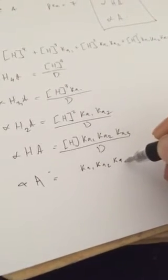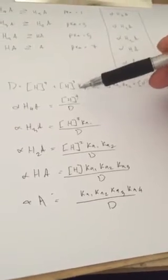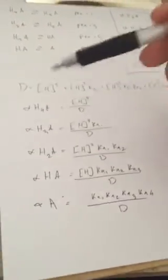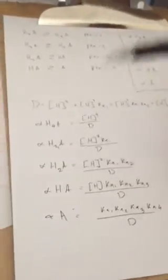And so that makes sense because in the first equation, you haven't lost, you want to find the amount of this fully protonated acid that hasn't lost any protons.